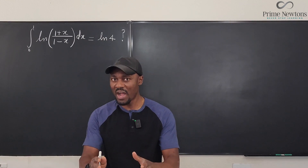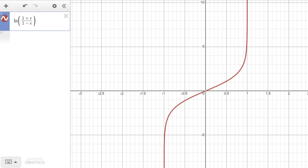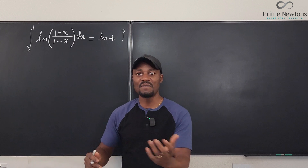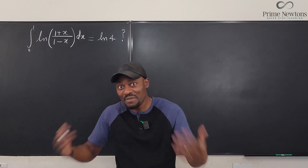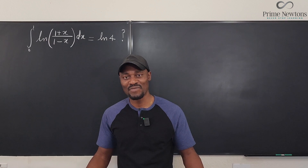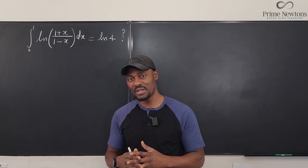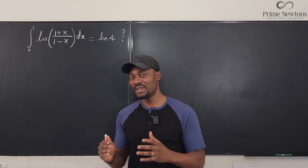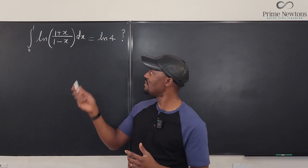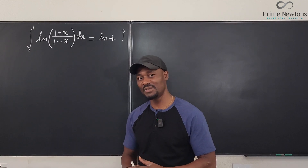This is why I thought I was right — the graph of this function looks like this because the function is not defined at one, but you're supposed to evaluate at one. So I know this is an improper integral and I had to take the limit, but even when you take the limit it goes to infinity. That's the problem — but the answer is still natural log of four. After a while I figured it out, so before you watch I want you to try it and see if you go straight to natural log of four.